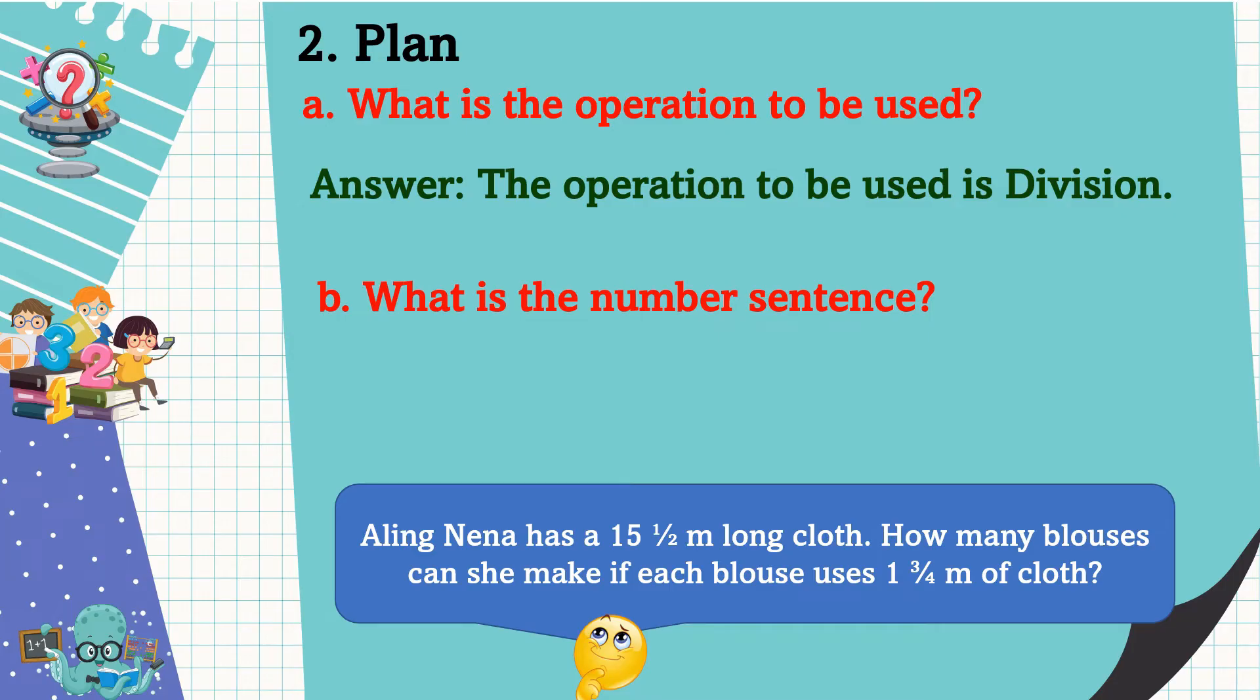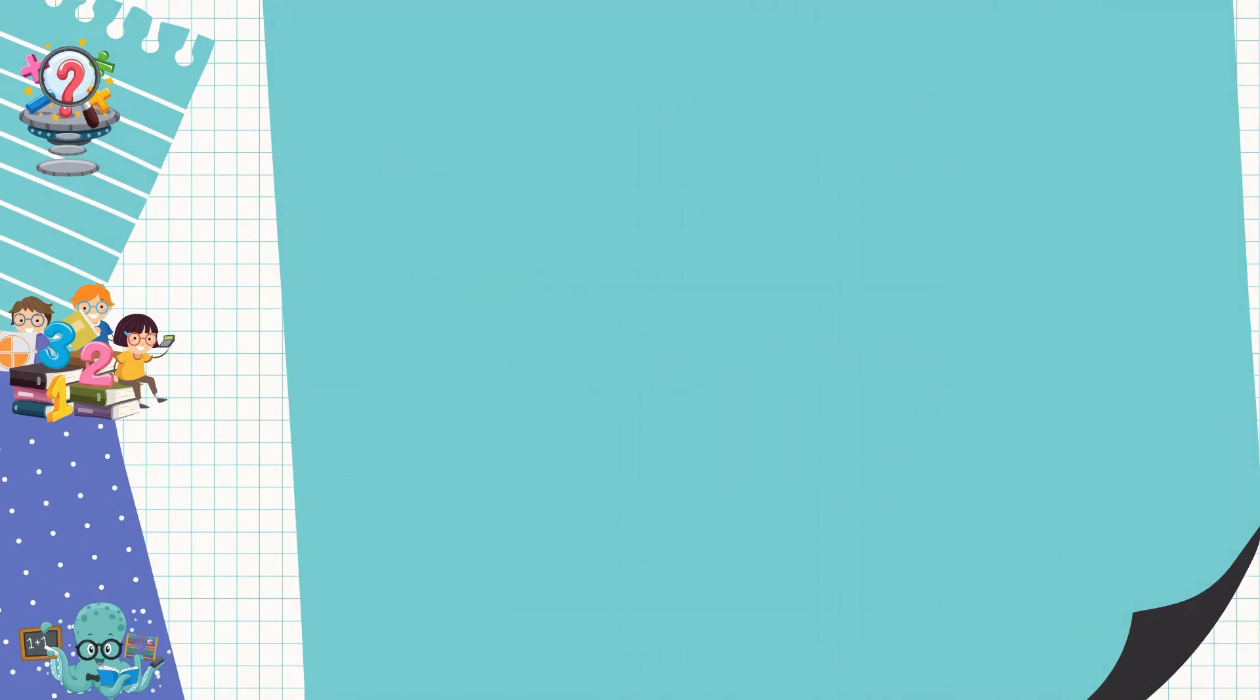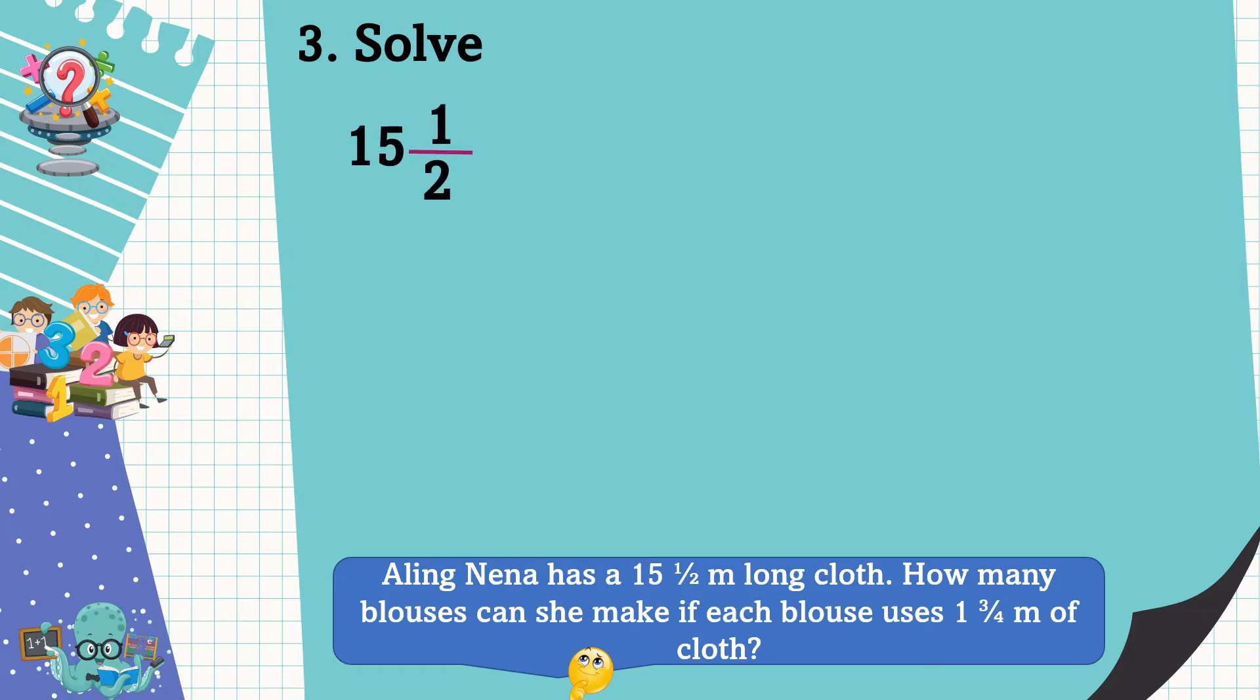Alright, the number sentence is 15 and 1/2 divided by 1 and 3/4 is equal to n. Since we have already a plan, then let's solve the problem. 15 and 1/2 divided by 1 and 3/4. In dividing mixed fraction by another mixed fraction, first we are going to change the mixed fraction into an improper fraction.